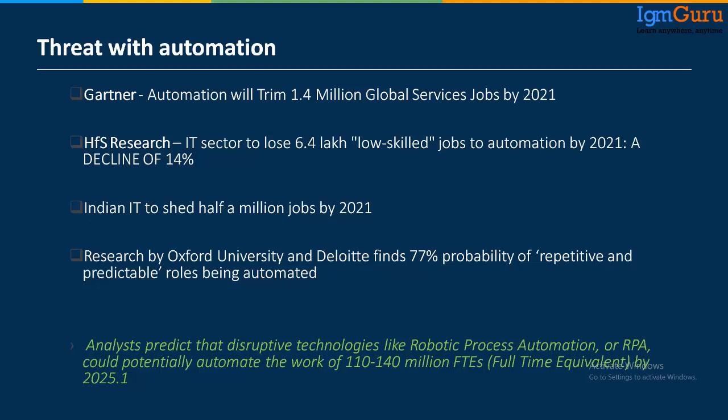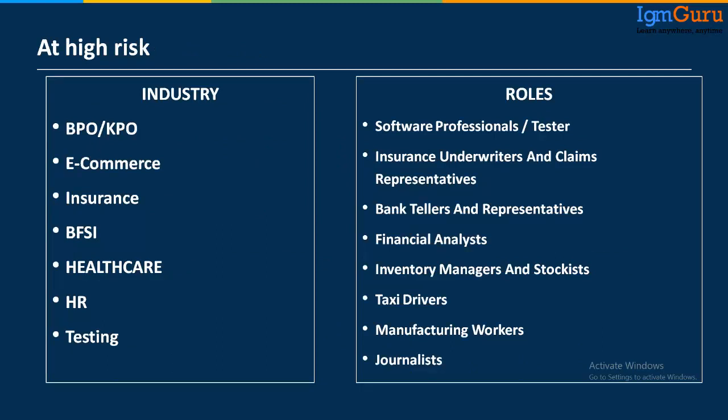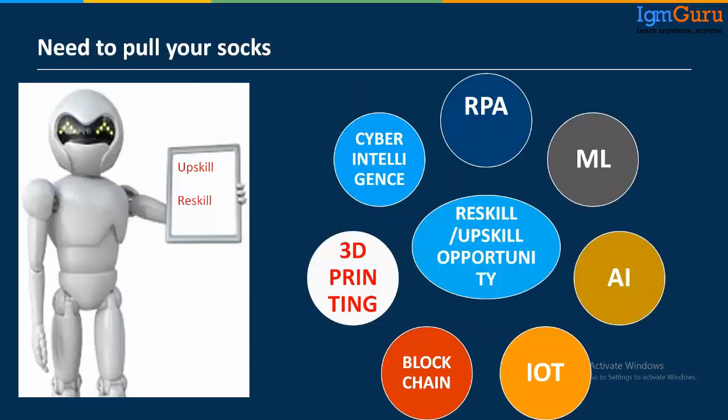These are the roles and industries at high risk: DPO, KPO, e-commerce, insurance, financial analysts, journalists, manufacturing workers, insurance underwriters, claim representatives, and manual testers. What manual testers do — create test scripts and manually execute them — can be replaced. Out of 10 manual testers, 8 can be replaced by bots, with 2 remaining to write test scripts. If you want to survive in the IT industry, especially in India where service-based companies dominate, you need niche skills. You must upskill and reskill in new technologies like RPA, Machine Learning, IoT, and Blockchain.